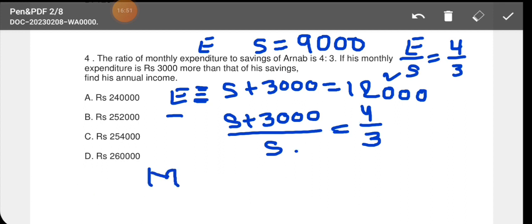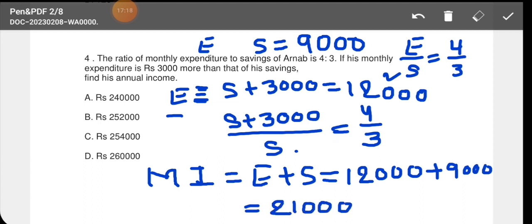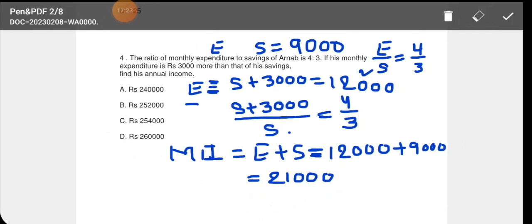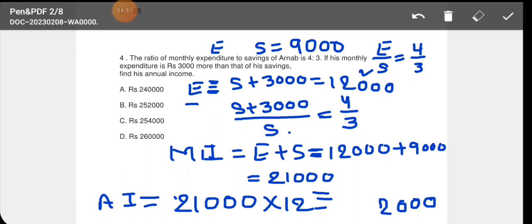Now we need annual income. Monthly income is equal to expenditure plus saving. 12,000 plus 9,000 equals 21,000. Now we need annual income. Annual means yearly, how many months? 12 months. So annual income is 21,000 into 12. Multiplying: 0, 0, 0, 12, 1 times 12 is 2 carry 1, 12, 2 times 12 is 24, 24 plus 1 is 25. So annual income is 252,000. Option B is correct for this.